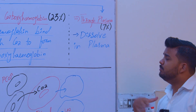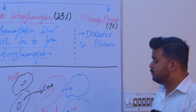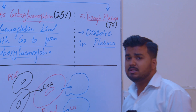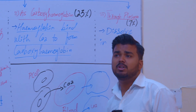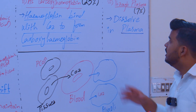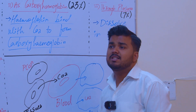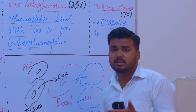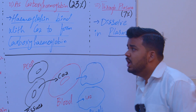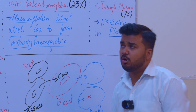Only 7% of carbon dioxide is transported in the blood dissolved in plasma. The process of transport through plasma is relatively inefficient, but nonetheless 7% of carbon dioxide is transferred in the blood dissolved in the plasma. This completes the topic of transport of gases.